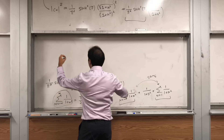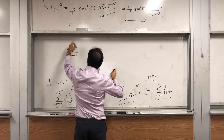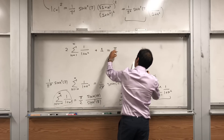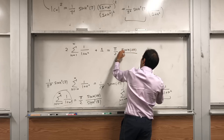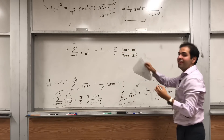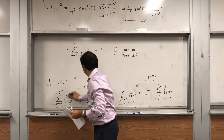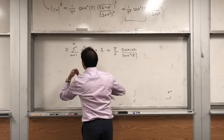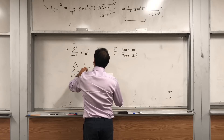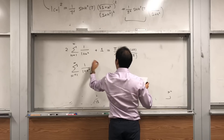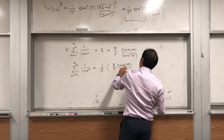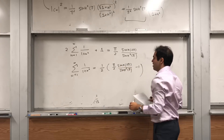So we have 2 times the sum from 1 to infinity of 1 over (1 plus n squared) plus 1 equals pi over 2 times sinh of 2 pi over sinh squared of pi. Solving for the one-sided sum, the sum from 1 to infinity of 1 over (1 plus n squared) equals one half times (pi over 2 times sinh of 2 pi over sinh squared of pi minus 1).